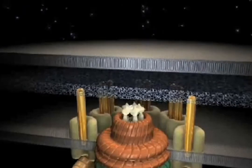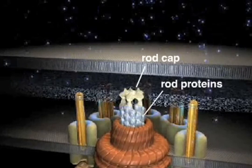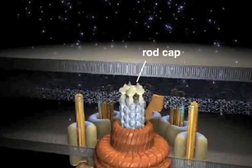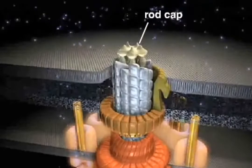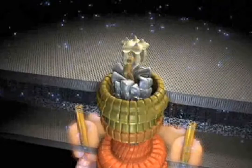The subunits of the rod portion of the rotor move up through the hollow cylinder in the assembly and, assisted by cap proteins, build up the rod in a proximal to distal fashion.